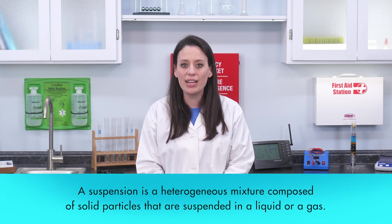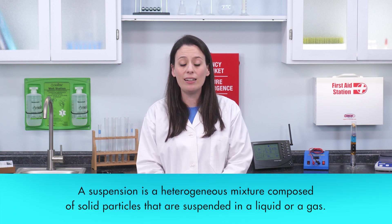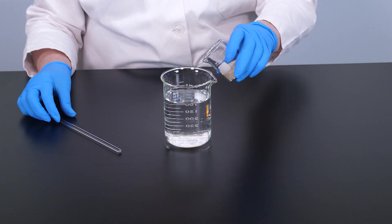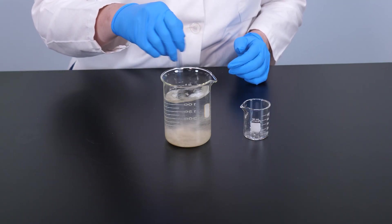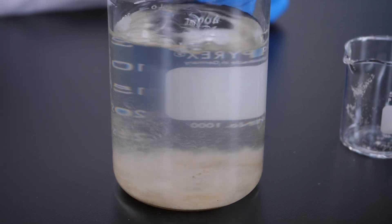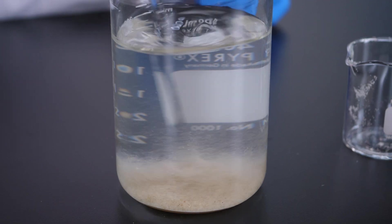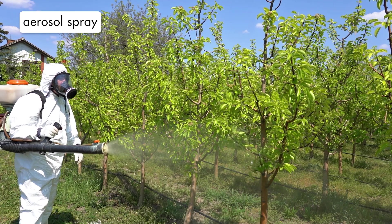A suspension is a heterogeneous mixture composed of solid particles that are suspended in a liquid or a gas. Because the suspension particles are so large and so heavy, they are not dispersed evenly throughout the suspension medium. If we mix sand with water and stir the mixture, the particles of sand become temporarily suspended in the water. However, because suspension particles are heavier than the particles in a solution or colloid, they do not remain suspended.